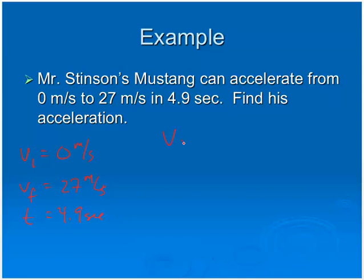We have vf equals vi plus at. His final speed is 27, his initial speed is 0. We want to find his acceleration, and the time is 4.9. I can get rid of that part because that really doesn't do anything. We're going to divide by 4.9. When I do that, I get an acceleration that's equal to 5.5 meters per second squared.